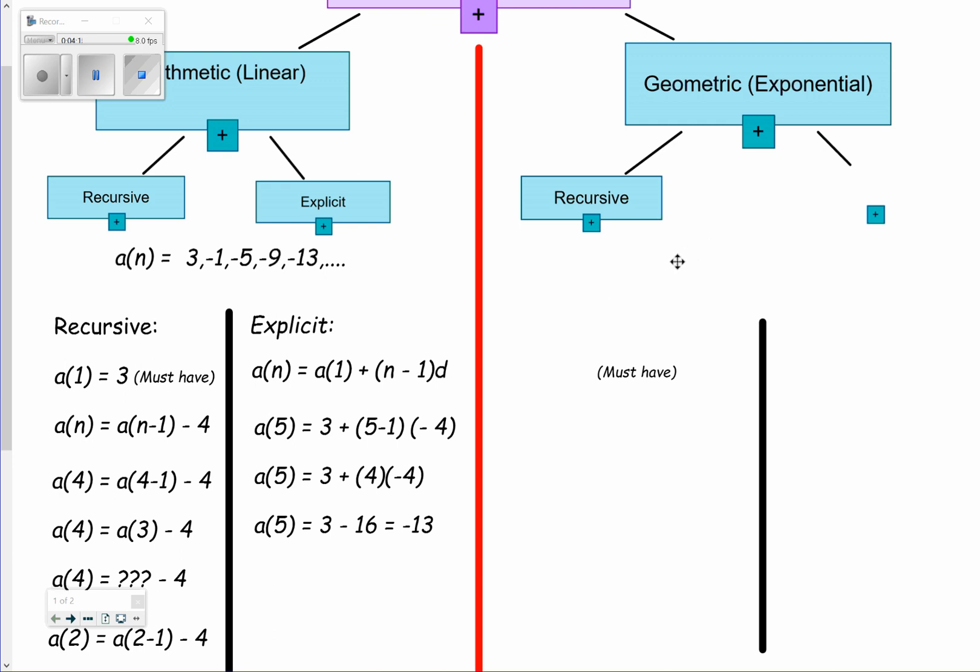First, recursive. Suppose you had a sequence something like this: a of n equals 6, 36, 216, 1296. Recursive with respect to geometric: once again, you have to have that first term. If you don't have the first term, you are dead in the water. You can't go any further. What recursive geometric says is to get some term, take the term before and multiply by 6.